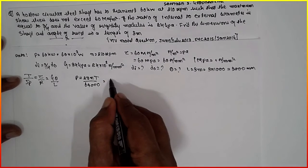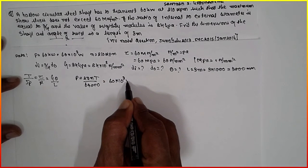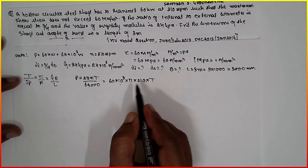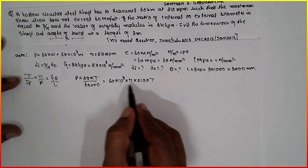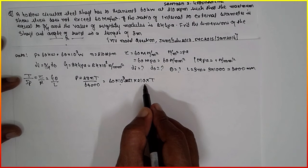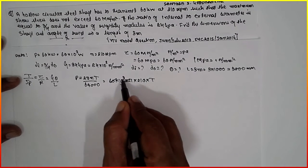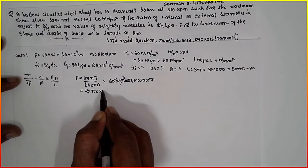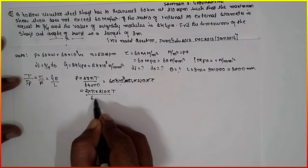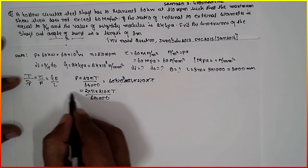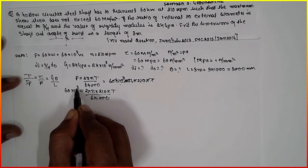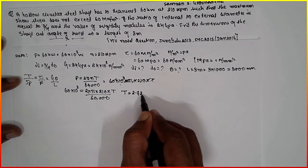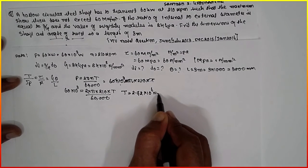The formula for power is P is equal to 2 pi N T divided by 60,000. The P is given as 60 times 10 raised to 3. Substituting: 60 times 10 raised to 3 equals 2 into pi into 210 into T divided by 60,000. Cross multiply, the T will be 2.72 times 10 raised to 6 newton-millimeter.